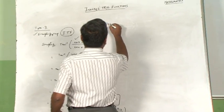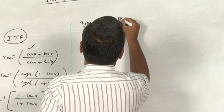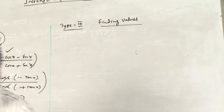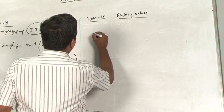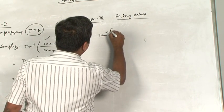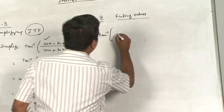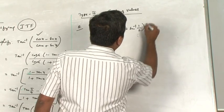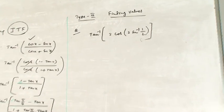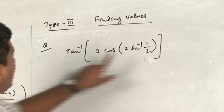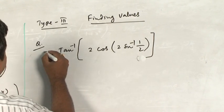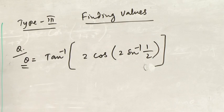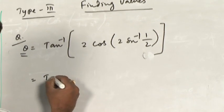Now we are going for Type 3 sort of problems — finding values. How do you go about it? I will take a simple problem: tan⁻¹(2cos(2sin⁻¹(1/2))). This problem is interesting because it has 2sin⁻¹(1/2) inside cos, with tan⁻¹ outside. Let us find the value step by step.